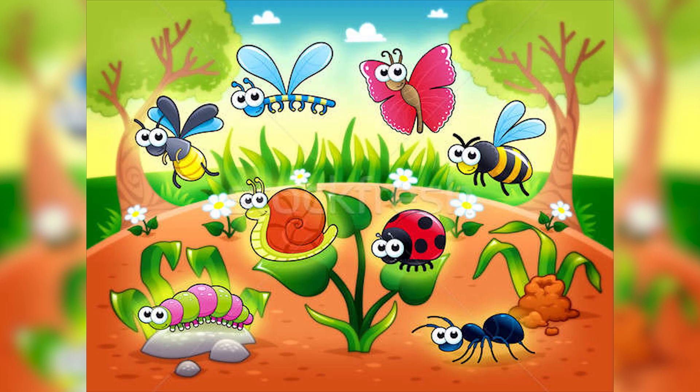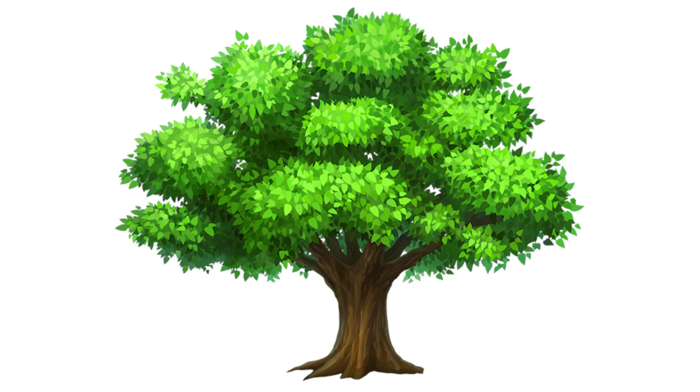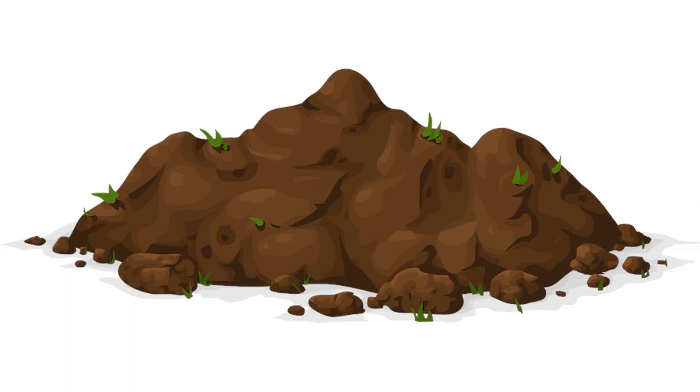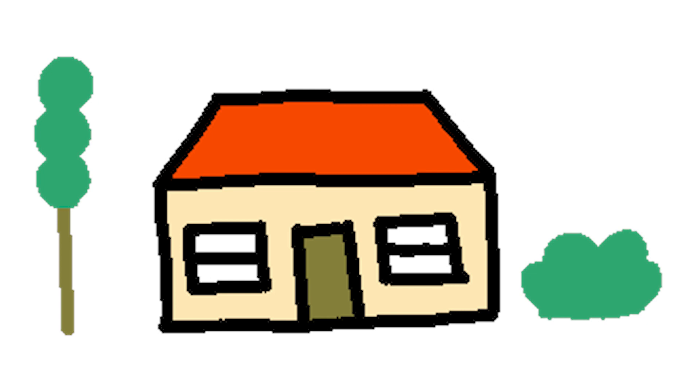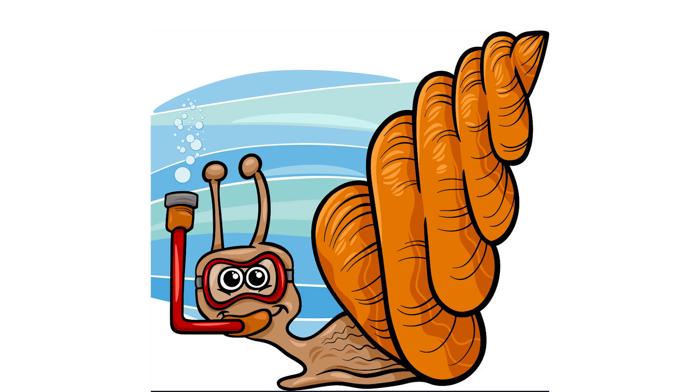You know, mini-beasts make their homes in lots of places like under logs and stones, in leaf piles, in trees, bushes, grass, or in the soil. Even we share our houses with some mini-beasts like spiders. There are lots of mini-beasts that live in ponds and rivers, but not all of them are good swimmers either.